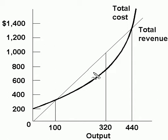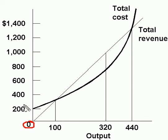So what we want to know is how much would our total cost be when we're producing absolutely nothing? At an output level of zero, our total costs are $100.